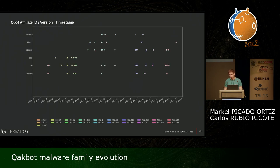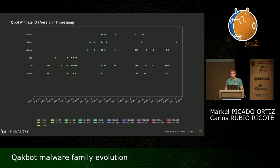Another interesting thing we can extract using the complete version number — major and minor — is that when updates for the different affiliate IDs are deployed, looking at the colors it's very easy to see they are deployed at very similar times. That means there is some kind of automatic builder or mechanism that allows the Qbot botnet to update itself in a transparent way for the affiliate. This is very different from common malware — for example, info stealers have to create an alert and tell affiliates they need to update. With Qbot, we think they directly update the bots in a process that is transparent to the affiliate.